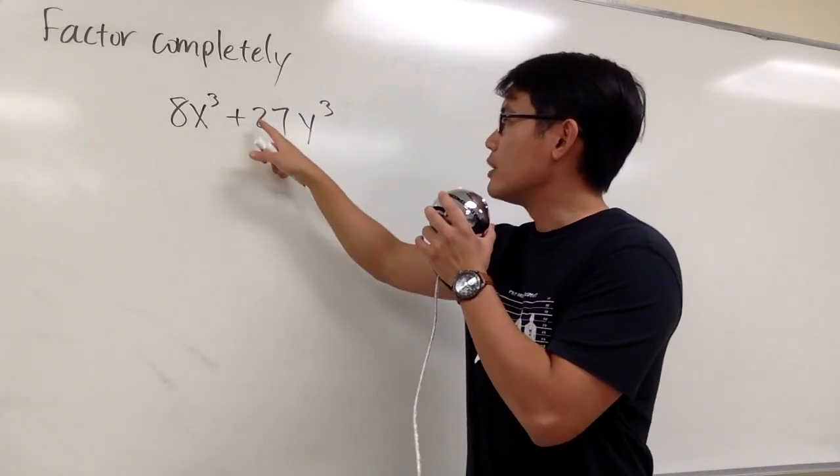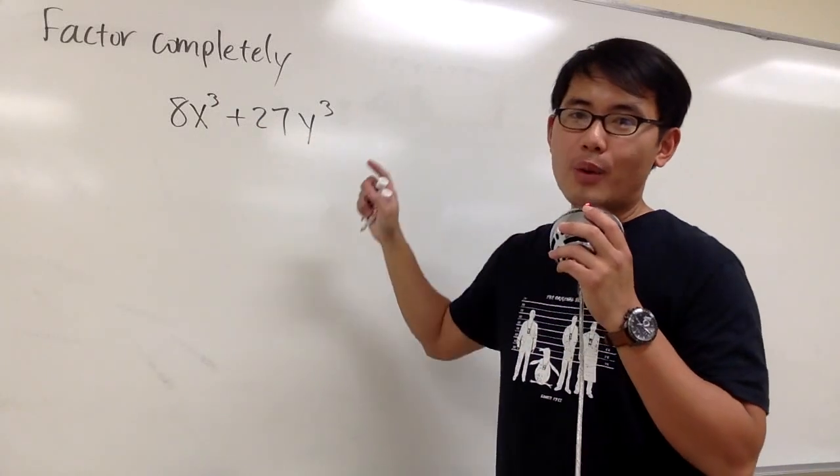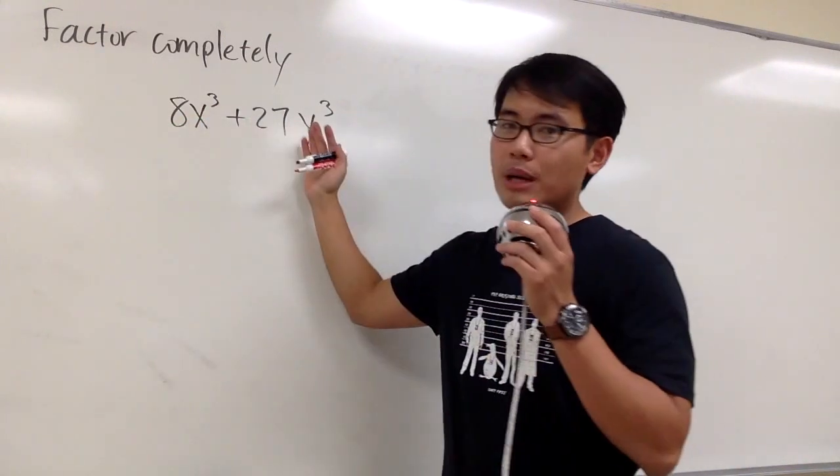We have 8x³ + 27y³. We see that we have two terms, but there's no common factor.